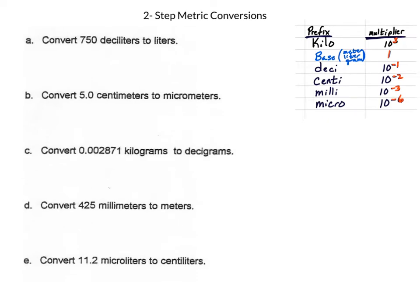We're now going to look at some two-step metric conversions. Previously we found letters A and D were one-step conversions, because they started or ended at a base unit. On letters B, C, and E, we see that neither of them are base units — they're both something with a prefix — which means we have to do an additional step, which is why we call it a two-step metric conversion.